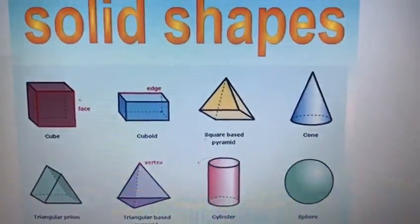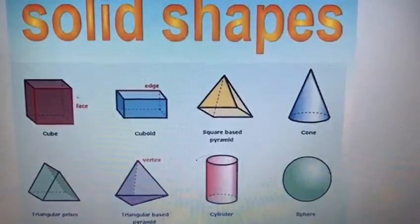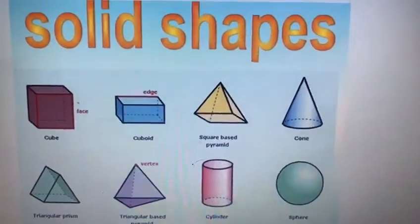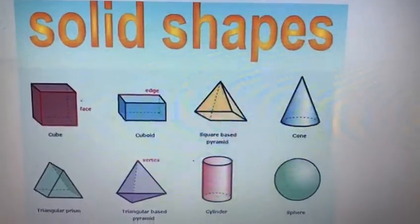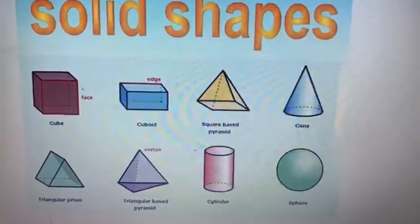Assalamu alaikum everyone. In maths class today we learned about solid shapes, so let's come with me and I'm going to tell you how many solid shapes we have. The first shape is cube, and the second is cuboid.